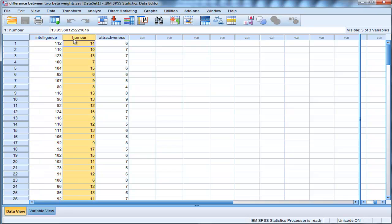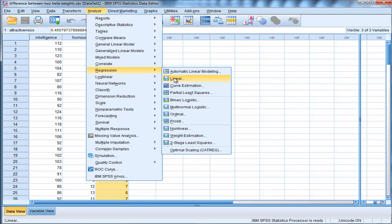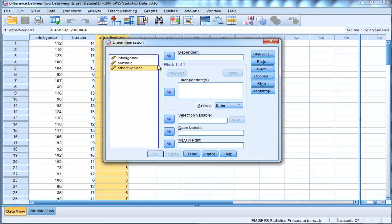And the hypothesis is, can you build a multiple regression equation where both of these variables predict attractiveness, but then even further than that, are the standardized beta weights equal to each other? So, how do we go about getting the estimates that we need? Go into regression, linear, and put attractiveness in the dependent box, and then...